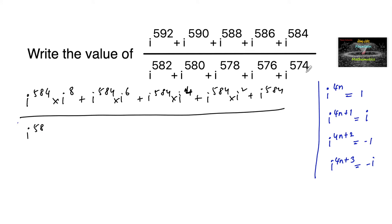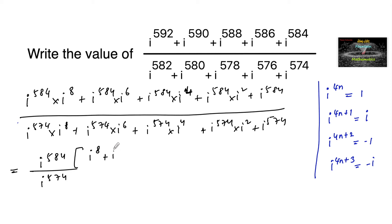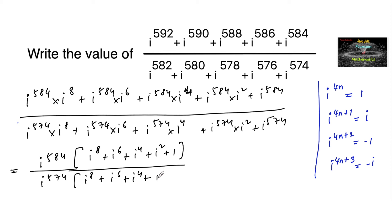In the denominator, the smallest power is i^574, taken as common. So the denominator becomes i^574 times (i^8 + i^6 + i^4 + i^2 + 1).